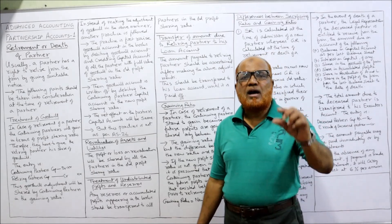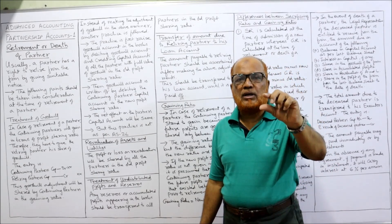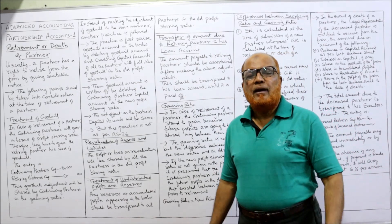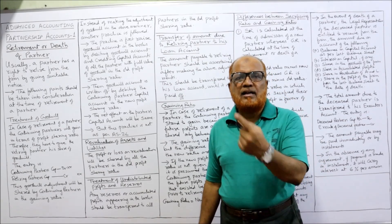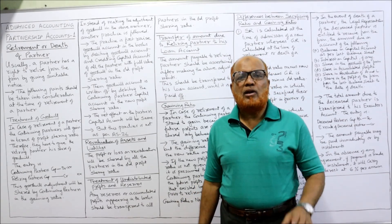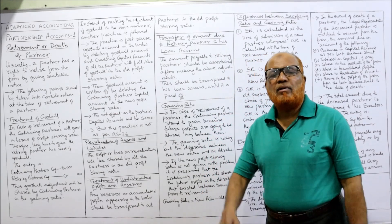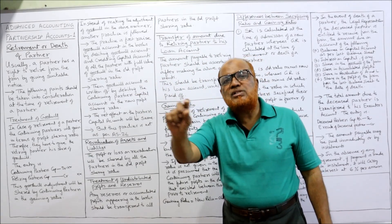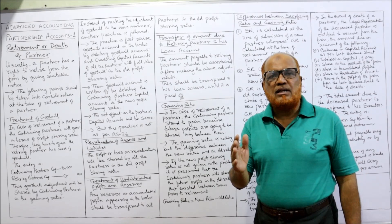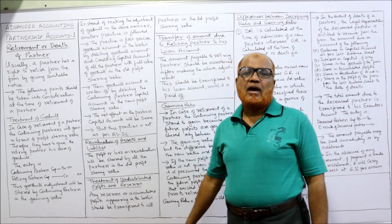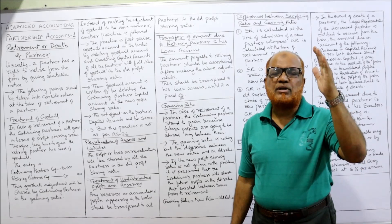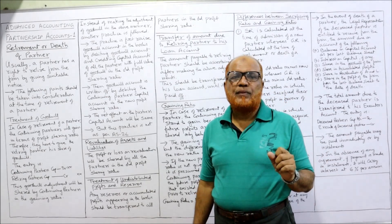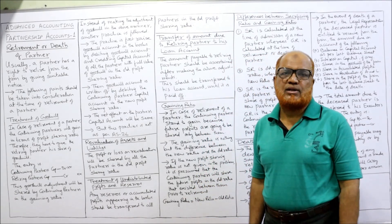The entry for goodwill given to the retiring partner will be: continuing partners' capital account debit and retiring partner's capital account credit. For example, A, B and C — C is retiring. Entry will be A's capital account debit, B's capital account debit, to C's capital account credit. The retiring partner is C so his capital should be credited, and the continuing partners A and B capital accounts should be debited. A and B will share the goodwill in the gaining ratio, which I will explain shortly.